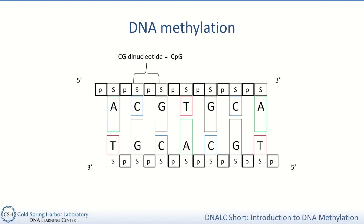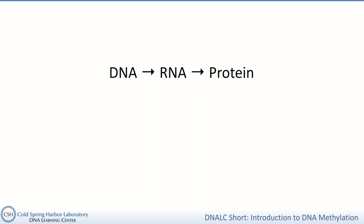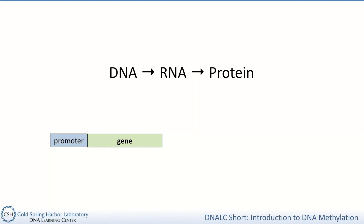So what does this little group of atoms being added onto a cytosine have to do with how our cells can follow instructions encoded in DNA differently? Well, DNA methylation, along with other epigenetic marks, has an impact on gene expression. Epigenetic marks impact which part of your DNA gets transcribed into RNA and translated into protein, and proteins are usually what actually carry out the functions of a cell. This is my depiction of a promoter, which is a region of DNA just before a gene where proteins bind to initiate transcription of this gene.